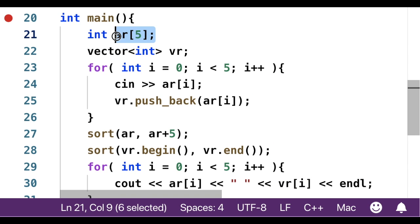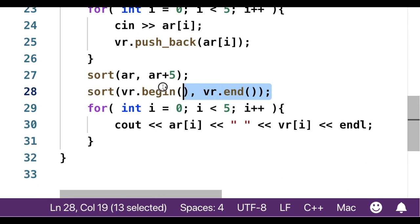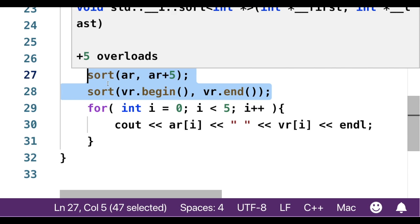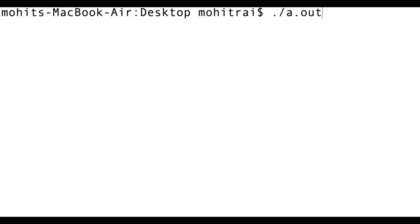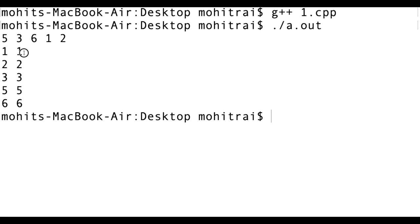Here, ar is an array and vr is a vector, and we take five elements in the array and in a vector. Then we will sort our array and our vector. Let's see the output. So here you can see that the output of array and vector are the same, which is in sorted order.